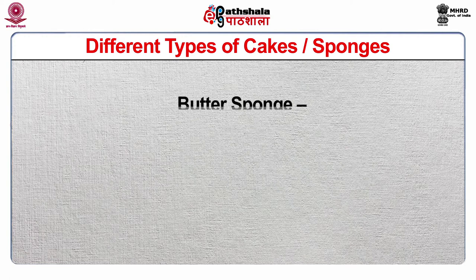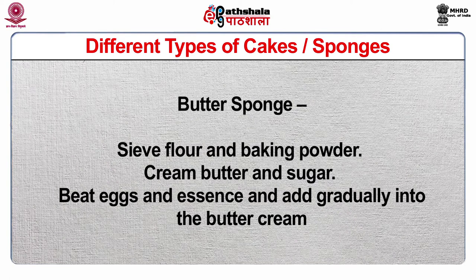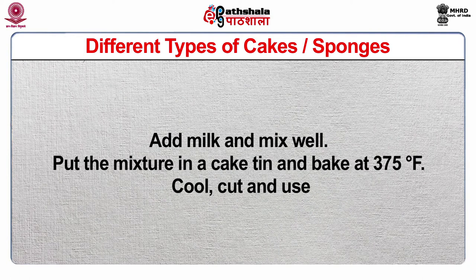Butter sponge: sieve flour and baking powder, cream butter and sugar, beat eggs and essence and add gradually into the butter cream, add milk and mix well. Put the mixture in a cake tin and bake at 375°F. Cool, cut and use.